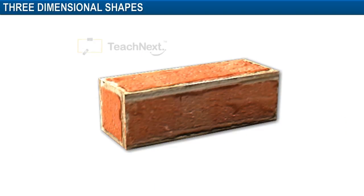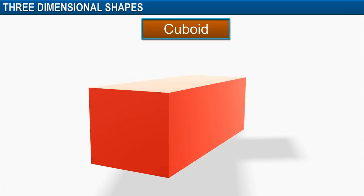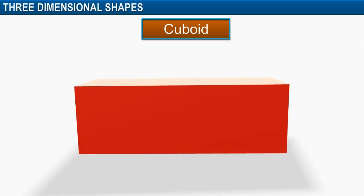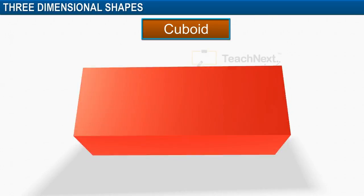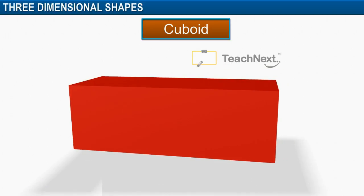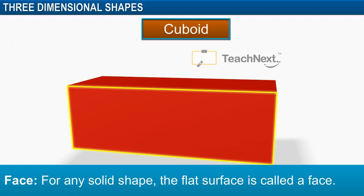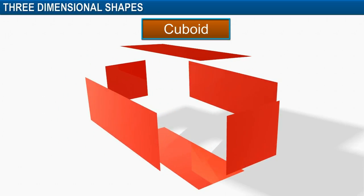Let's consider a brick. It forms a three-dimensional shape called a cuboid. A cuboid is formed with six rectangles. These rectangles form the surface of the cuboid. They are called the flat faces or simply face. A cuboid has six faces.